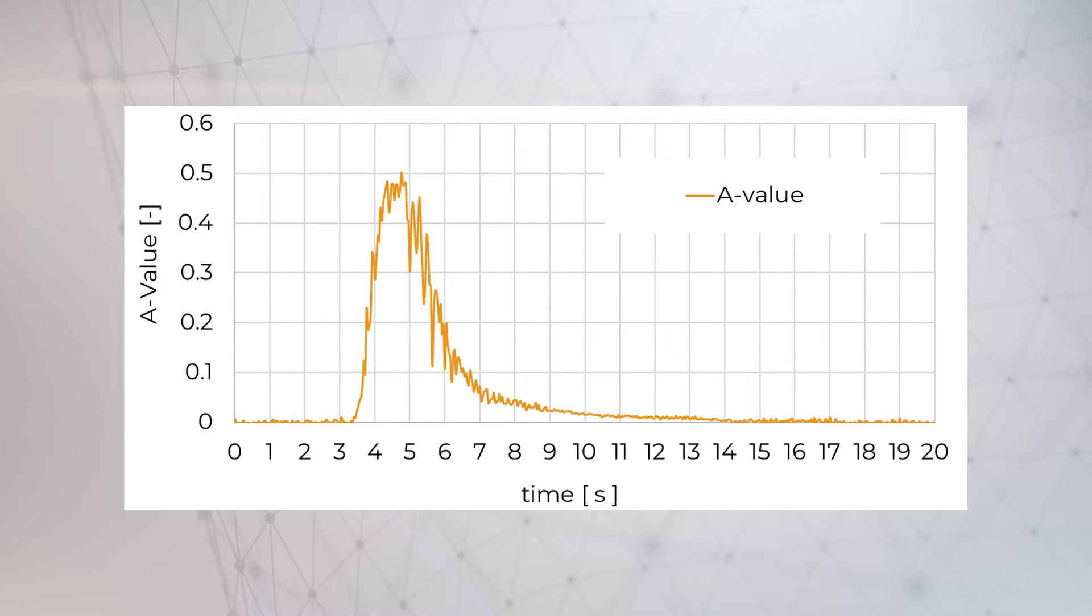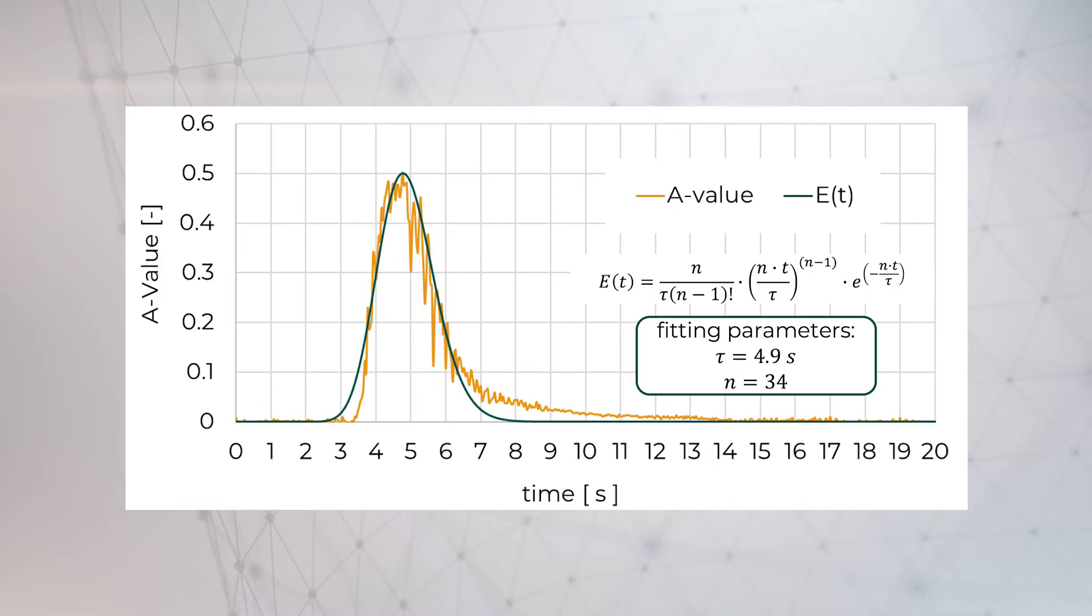If I now try to fit the curve just using the equations we already know, it would look like this. Here I use the equation for the continuous stirred tank cascade with a tau of 4.9 seconds and an n of 34.